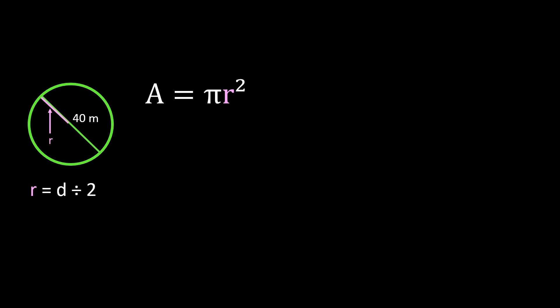To find the area of a circle we use the formula area equals pi r squared, where r is our radius. In this example we don't have a radius, so we need to calculate it. The radius goes from the center of the circle to the outer edge, and what we've been given is the diameter. To find the radius we divide the diameter by 2: 40 divided by 2 is 20, so the radius of this circle is 20 meters.